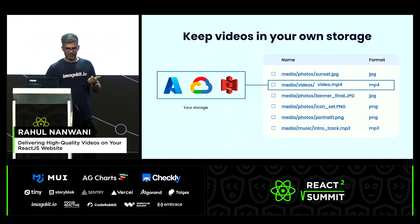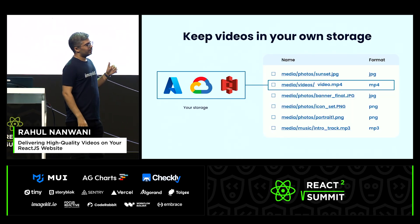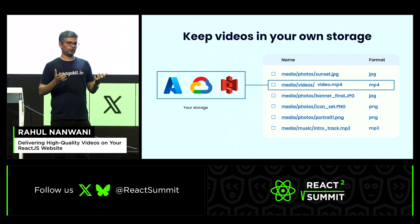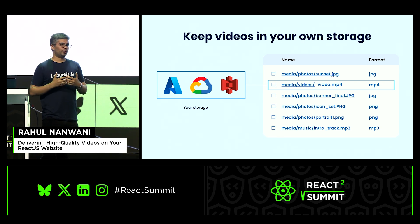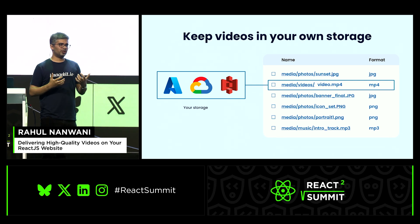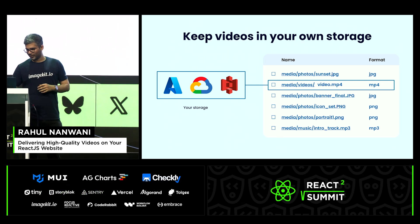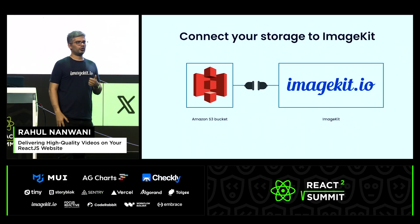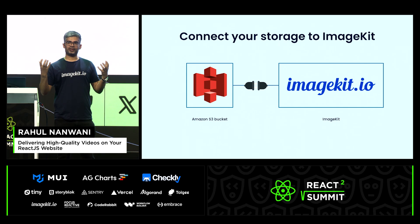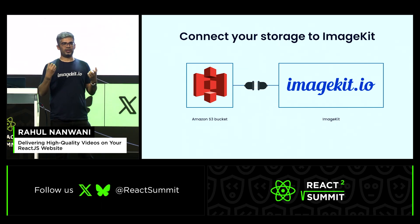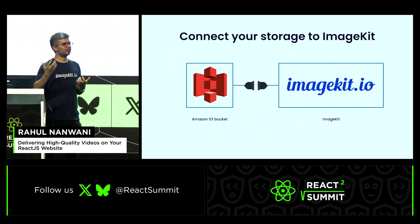Let me show you how this works. You can keep uploading all your content — images, videos, etc. — to your cloud storage, the way you're doing right now. It could be any popular cloud storage, a web server, private — it doesn't matter. Just keep uploading assets wherever you're uploading them. Then you simply connect that storage to ImageKit, similar to connecting an origin to a CDN. We're not pulling assets from your bucket permanently — it's just a connection that allows ImageKit to pull the asset in real-time when you access it via ImageKit.